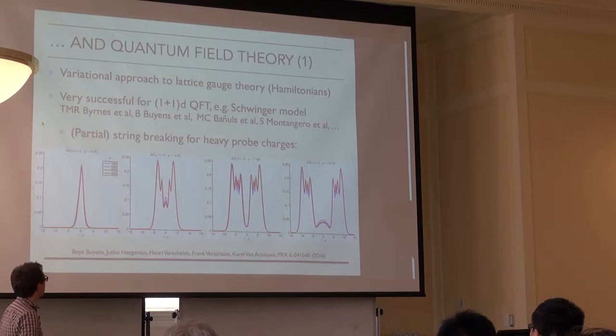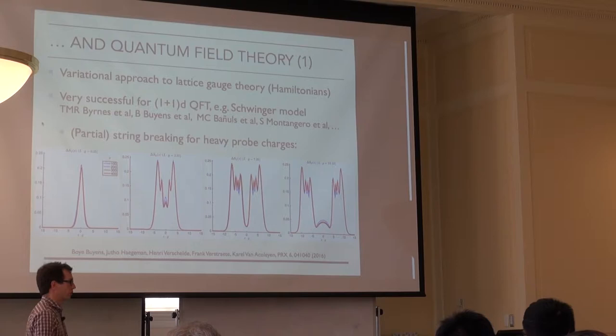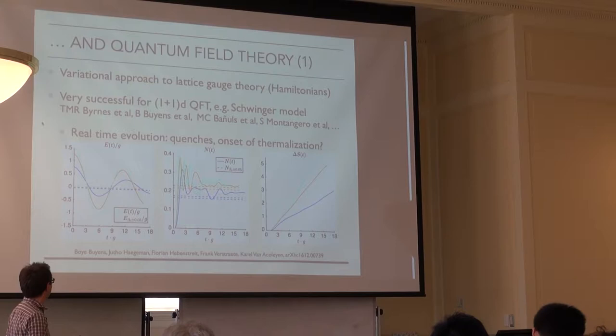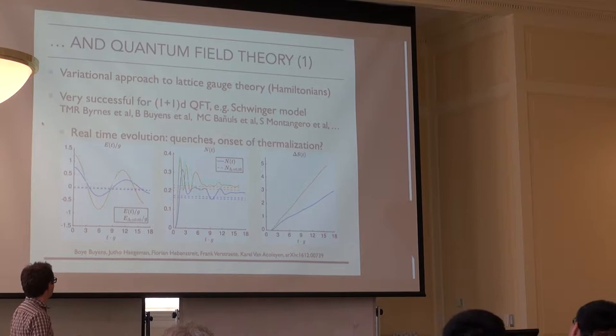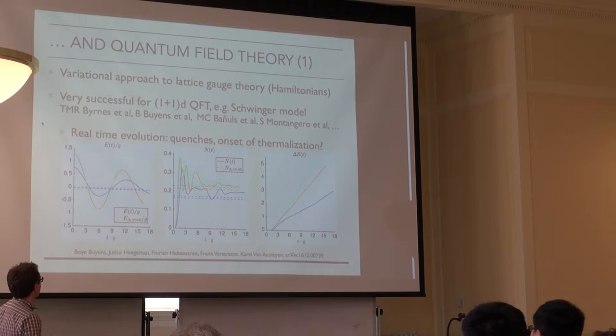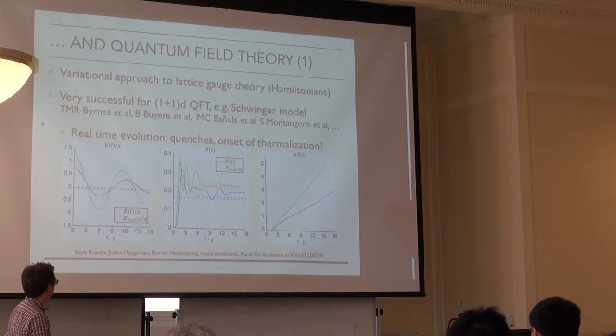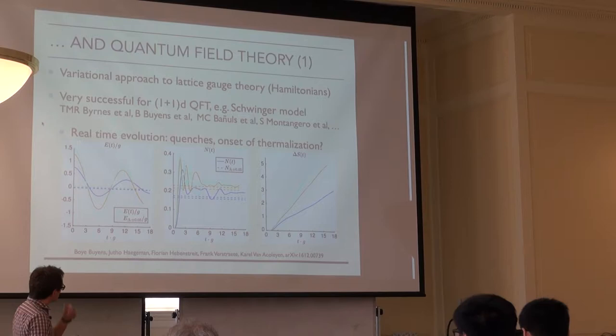Another advantage of tensor networks over traditional Monte Carlo is that they can do real-time evolution, although they're limited since entanglement is expected to grow in real time, putting a natural cutoff on reachable time. Here is an example simulation for a quench: you compute the ground state in the presence of a background electric field, then let it evolve with the Hamiltonian without the background field. You look at how the electric field and the number of fermion pairs evolve over time.